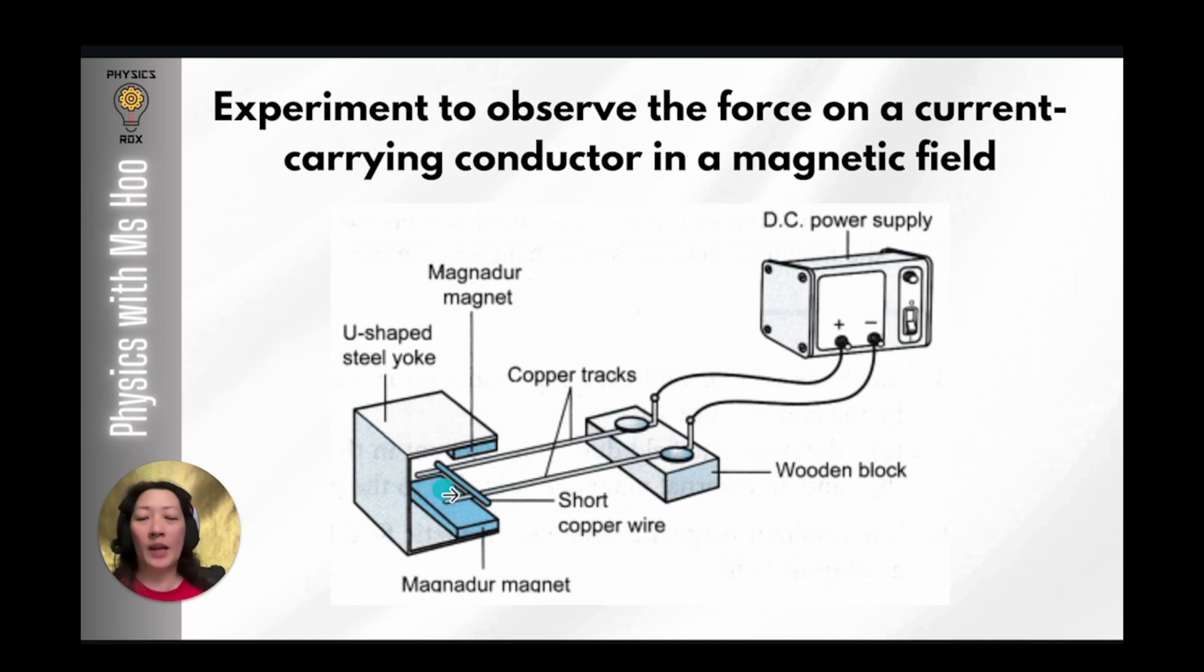The copper tracks and the short copper wire must be exposed because the short copper wire will move and in order to maintain the connection of the circuit they have to be exposed so that current can continuously flow. The short copper wire must be able to move freely and this is placed within a magnetic field. The magnetic field is created by placing two magnets with the opposite poles facing each other. When current flows through the copper wire we can observe the movement of the copper wire whether it's to the left or to the right.